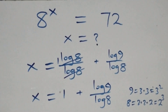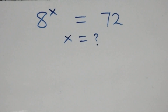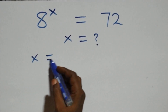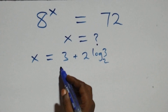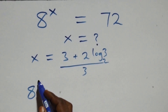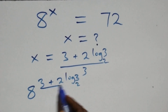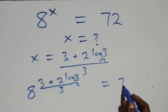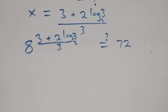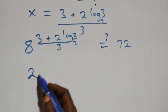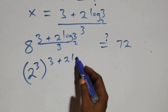We substitute the value of x, which is (3 plus 2 log₂3) all over 3, back into the original equation. So we have 8 raised to the power (3 plus 2 log₂3) all over 3 equal to 72. We then express 8 as 2 raised to power 3, giving us (2³) raised to the power (3 plus 2 log₂3) all over 3, which must equal 72.